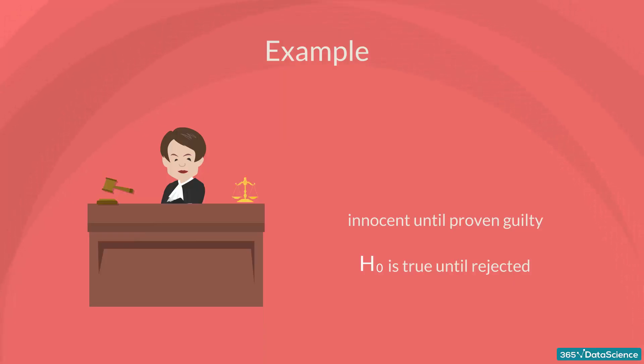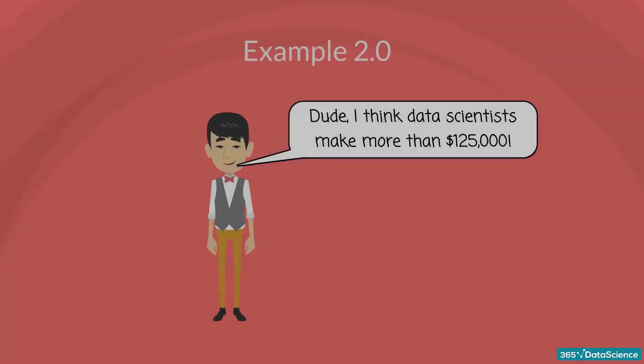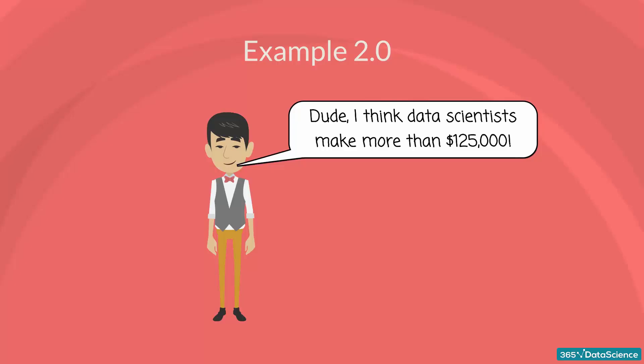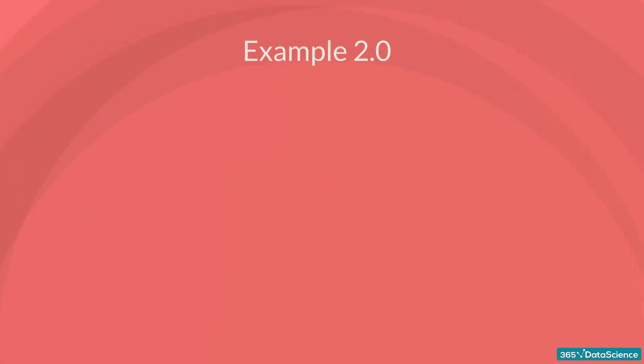You can also form one-sided or one-tailed tests. Say your friend Paul told you that he thinks data scientists earn more than $125,000 per year. You doubt him, so you design a test to see who's right. The null hypothesis of this test would be: The mean data scientist salary is more than $125,000. The alternative will cover everything else. Thus, the mean data scientist salary is less than or equal to $125,000.